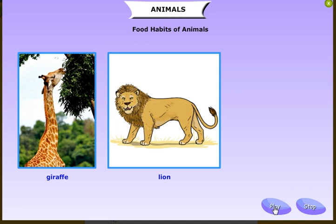For example, the giraffe is a herbivore. Carnivores are animals that eat the flesh of other animals — they are known as carnivores.